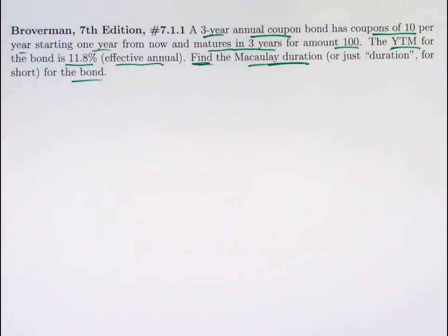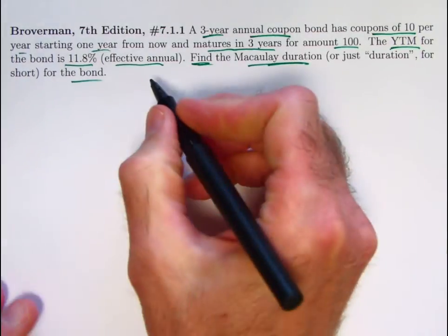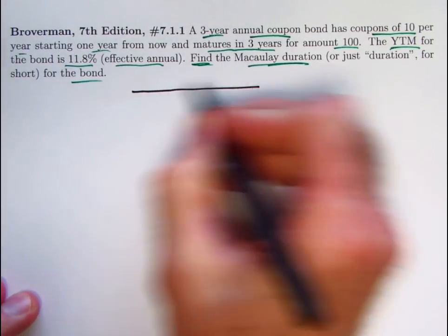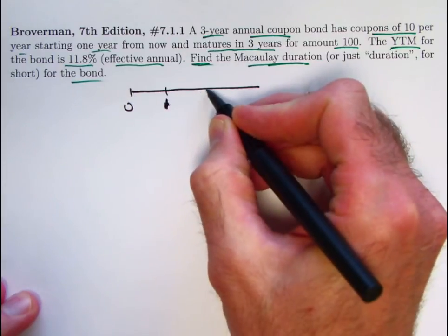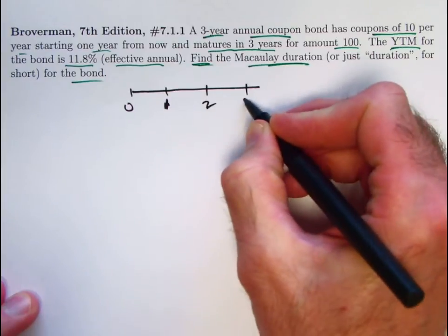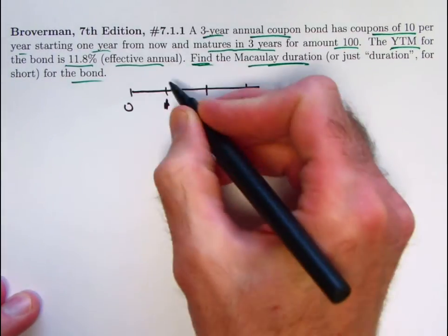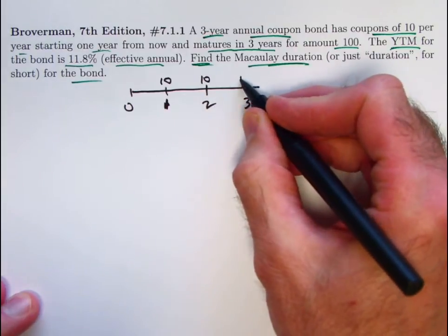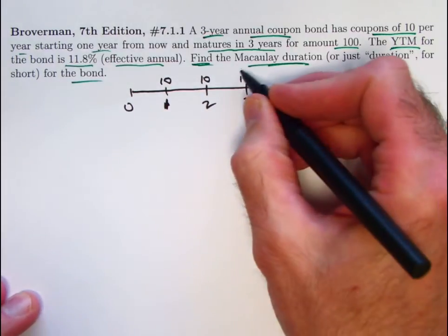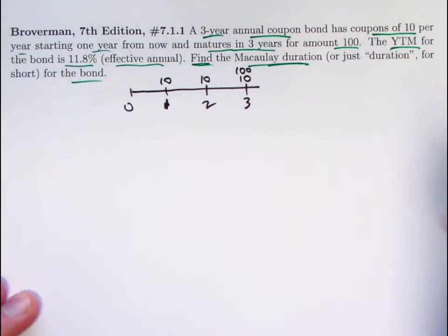The goal here is again to find this Macaulay duration or just duration for short for this bond. So again, I want to focus on the meaning of the duration. Let's first draw a timeline to remind ourselves of what's going on here with the bond. We've got payments at time one, time two, and time three in years. We get a coupon of 10 at time one, a coupon of 10 at time two, and the final coupon of 10 at time three, in addition to the redemption value of 100 at time three.